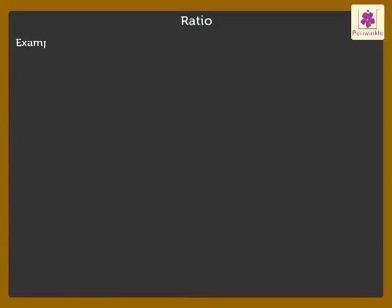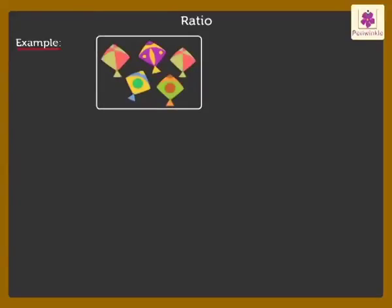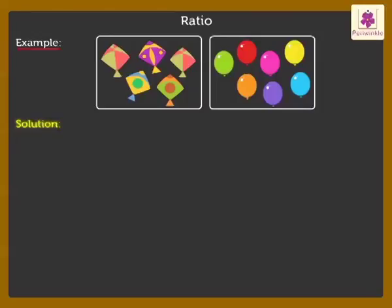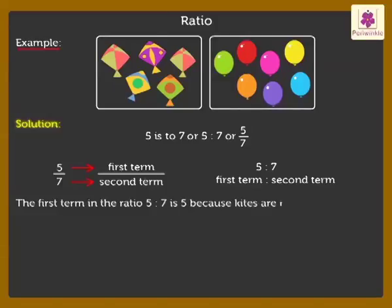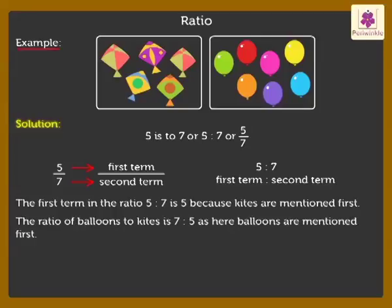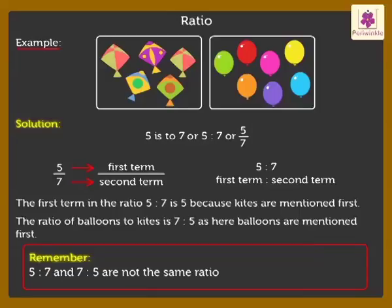Let us understand with an example. Here are 5 kites and 7 balloons. We write the RATIO of 5 kites to 7 balloons as shown. It is read as 5 is to 7. 5 is called as the first term and 7 as the second term. The first term in the RATIO 5 is to 7 is 5 because kites are mentioned first. The RATIO of balloons to kites is 7 is to 5, as balloons are mentioned first. Remember, 5 is to 7 and 7 is to 5 are not the same ratio, as 5 is to 7 is 5 upon 7, and 7 is to 5 is 7 upon 5.